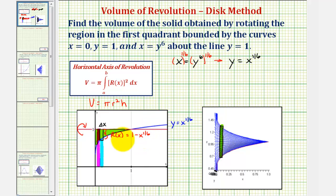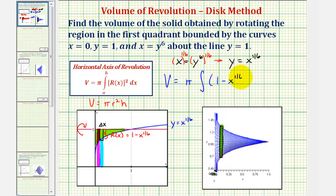Now we have all the information we need to find our volume. The volume is equal to pi times the integral of r of x squared — which is the quantity one minus x to the one-sixth, squared — integrated with respect to x from zero to one. Let's evaluate this on the next slide.